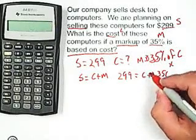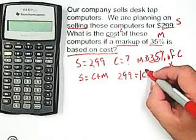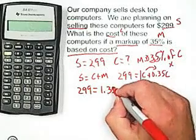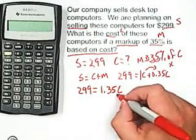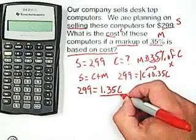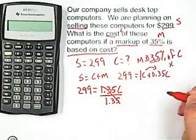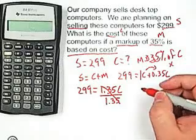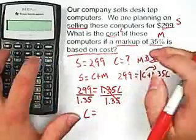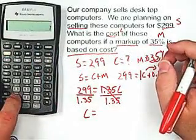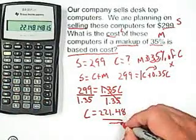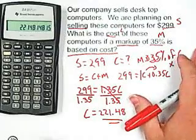When you have a letter by itself, you can just add a 1 in front. So then after we do that, we can add the C's together: 299 equals 1.35C. It's 1.35 times C, so to solve for C we divide by 1.35. That cancels out, leaving us with C. We have to do the same thing to the left side, so I also divide by 1.35. Using the calculator: 299 divided by 1.35 gives me a C of $221.48 — that is the cost of the desktop computers.